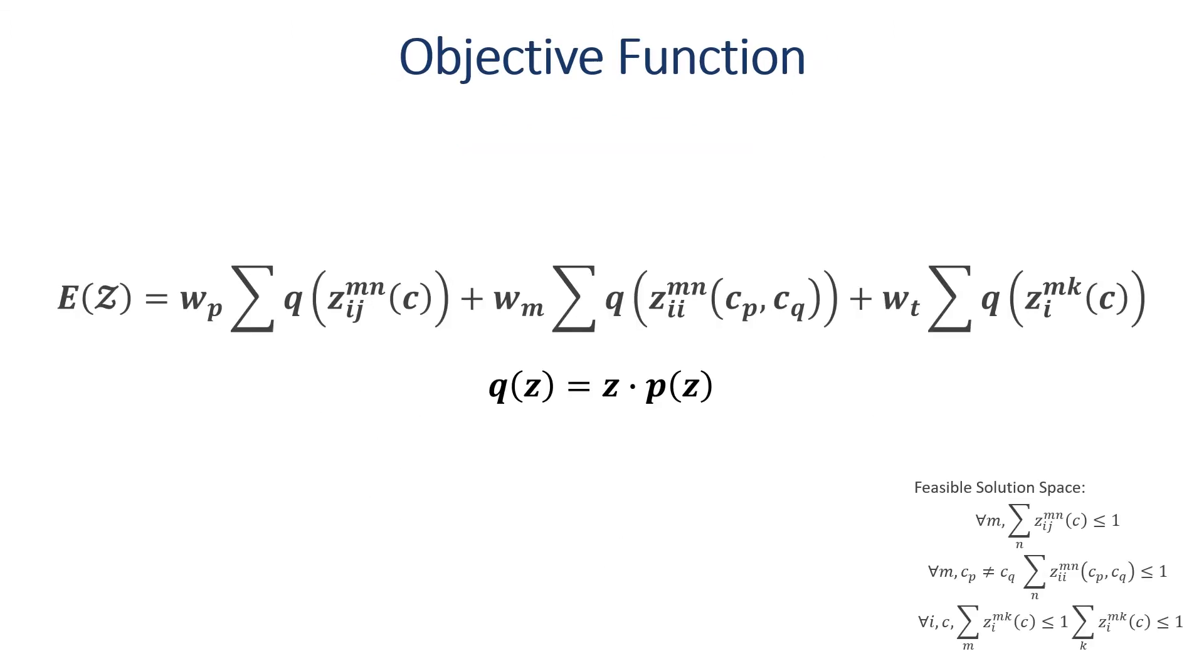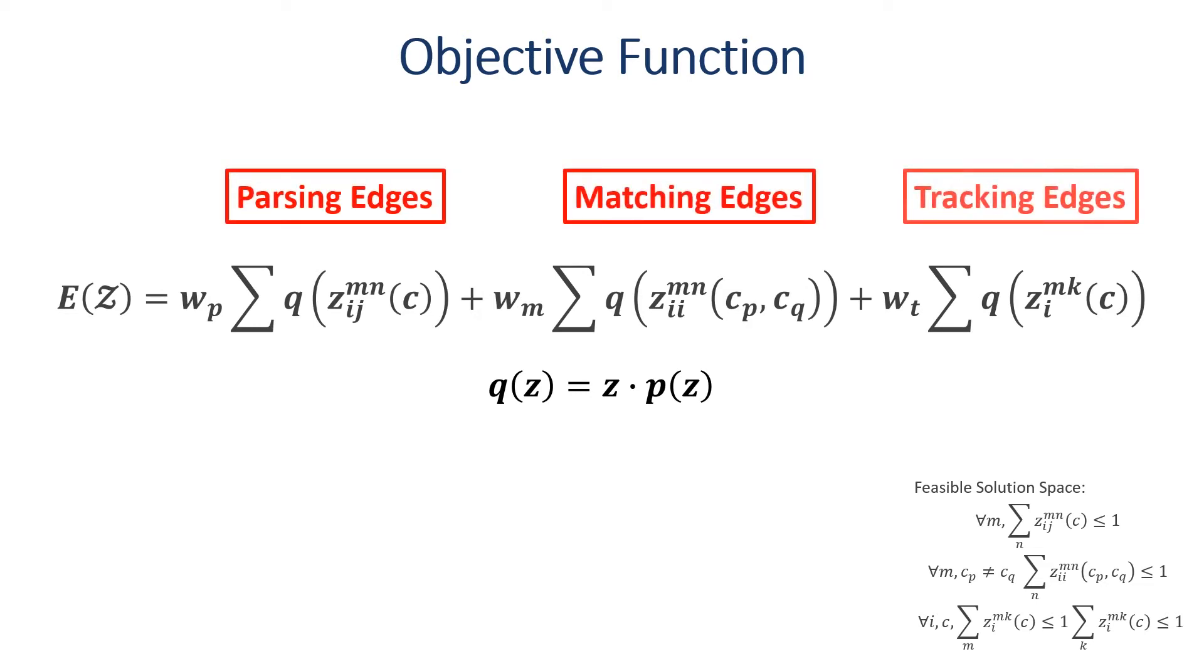Our 4D association optimization can be formulated as an edge selection problem to maximize the energies of all selected edges, including parsing edges, matching edges, and tracking edges.